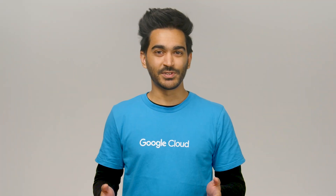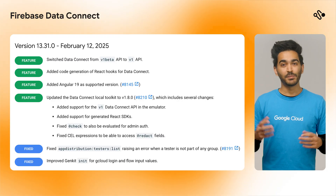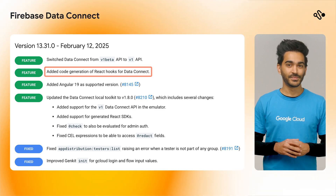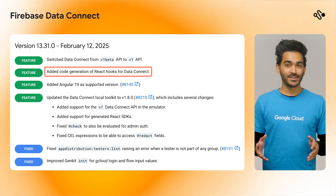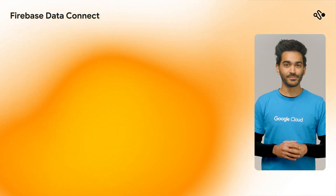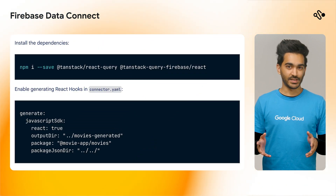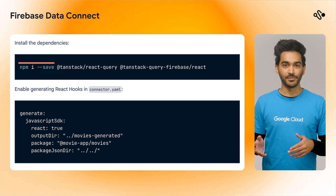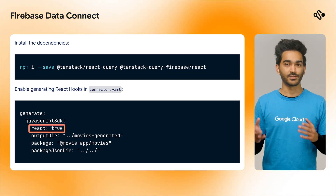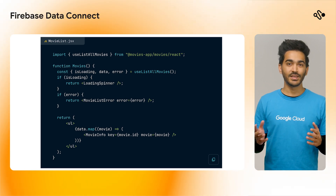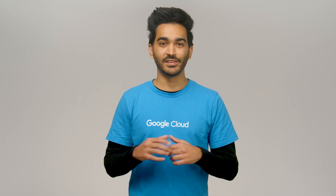Let's start with two updates for developers using Data Connect. Update number one is for web developers using React and Angular. Data Connect can now generate SDKs for these popular web frameworks. To get started with React, for example, install the TanStack Query Firebase library, enable React in your connector.yaml file, and you should now be able to use these React hooks in your code. Check out the link in the description to learn more.